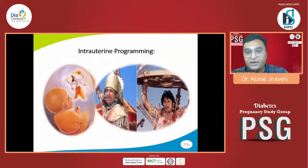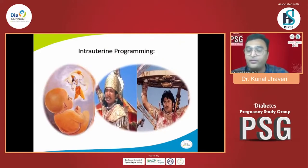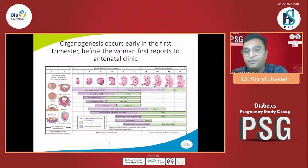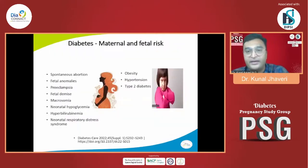Why is this worrisome? Let's understand from the ancient wisdom of India. We all know the story of Veer Abhimanyu, who had intrauterine programming to understand how to enter the chakra, but could not come out. The same has been proven by modern science: organogenesis occurs early in the first trimester, before the woman even first reports to the antenatal clinic. By that time, organ damage and genetic programming have already occurred.